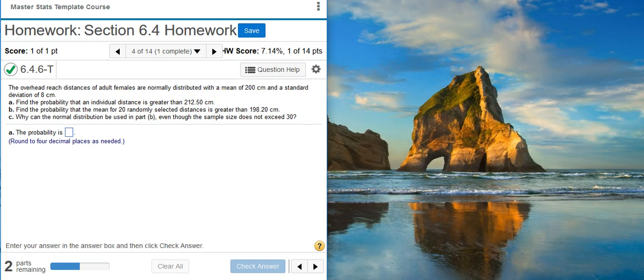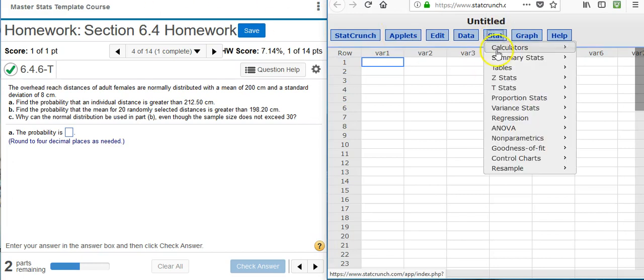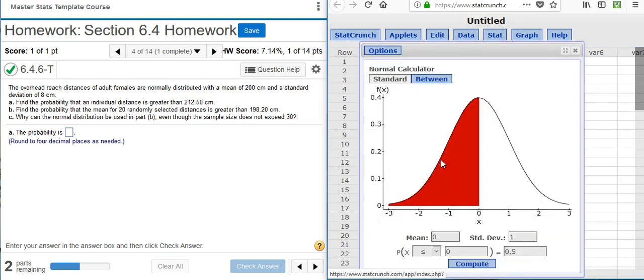This problem is very easily tackled inside StatCrunch, so I'm going to pull up StatCrunch here, and inside StatCrunch I'm going to go to Stat, Calculators, Normal. Why am I pulling up the normal calculator? I'm doing that because the problem statement says that our data are normally distributed.